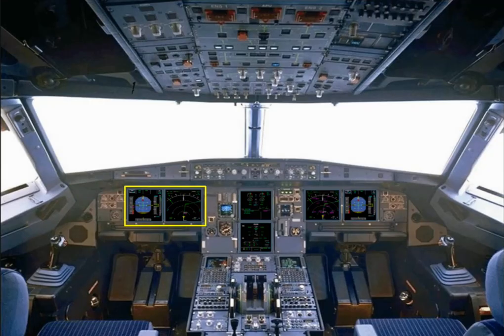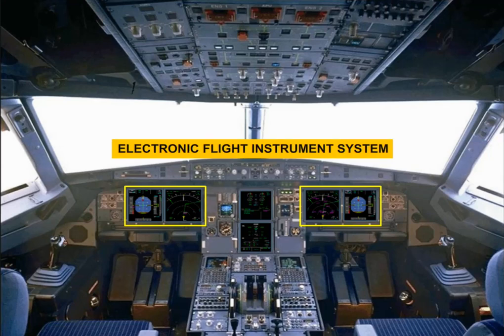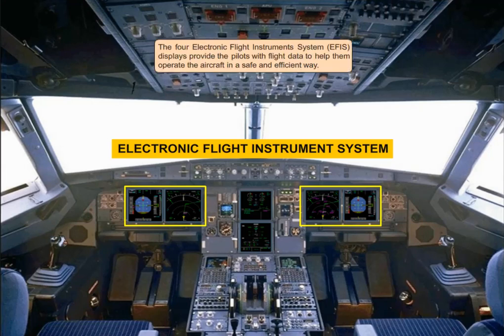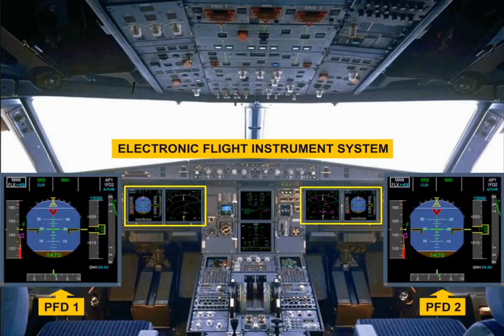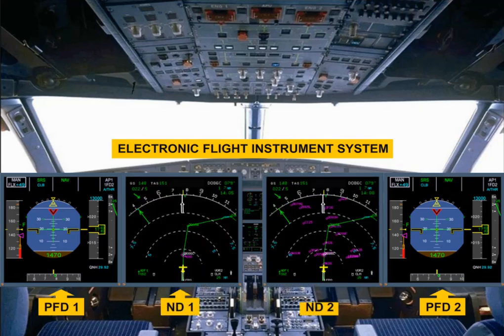The four electronic flight instrument system, EFIS, displays provide the pilots with flight data to help them operate the aircraft in a safe and efficient way. Flight parameters are displayed on primary flight displays, PFD, while navigation data is displayed on navigation displays, ND.